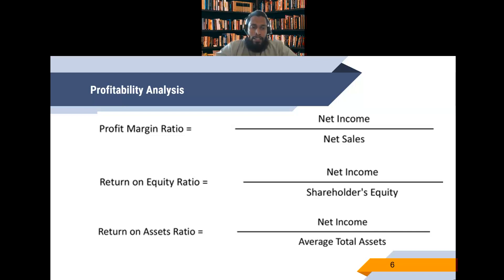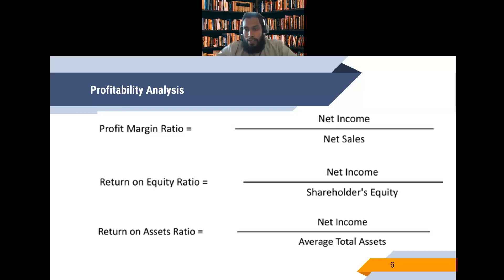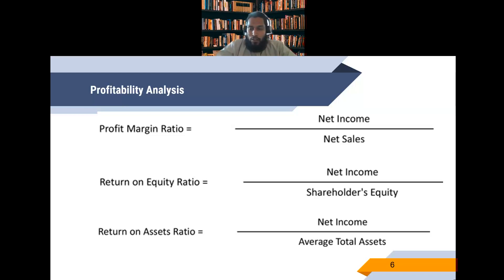Another important ratio is return on equity (ROE) — using how much of the shareholders' equity, how much profit they are getting. This is important for shareholders, and it also shows how much the company is giving profit to shareholders compared with using debt. To calculate ROE, we take net income and divide it by shareholders' equity, giving us how much return the company is able to generate using shareholders' equity.